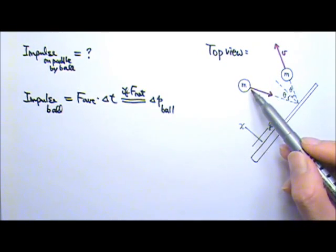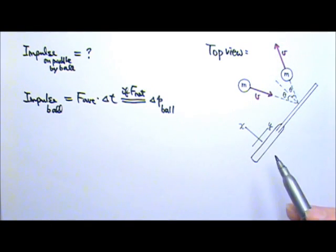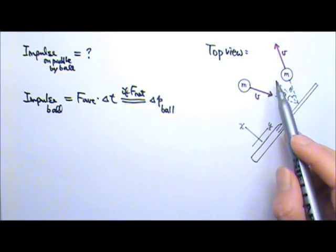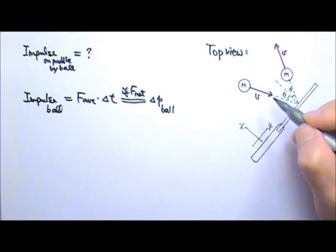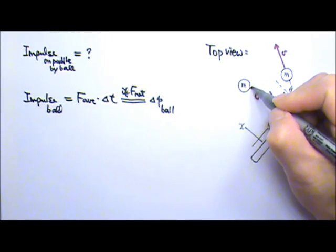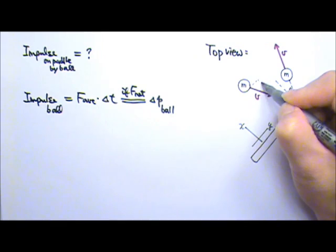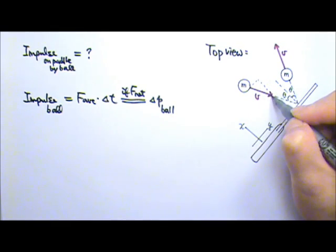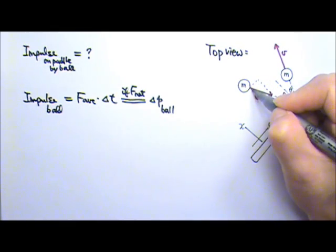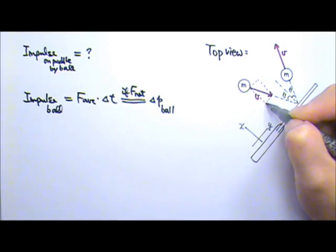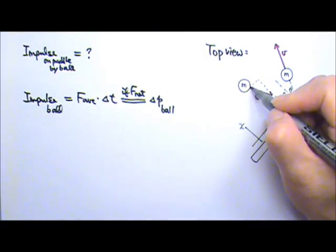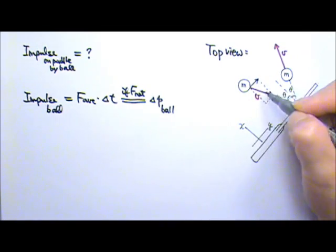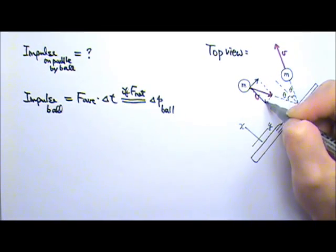So for these slanted velocities, we'll have to find the components for those. So we have to make a rectangle like this. Parallel to the paddle surface and perpendicular to the paddle surface. The velocity goes that way, so the two components will be this one and that one.